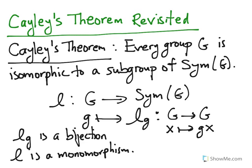Now the downside of Cayley's theorem is that we're embedding G into a group sym of G, which is really, really big usually. The order of sym of G is equal to the order of G factorial.